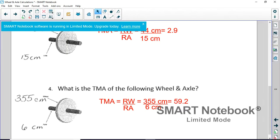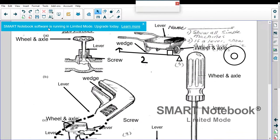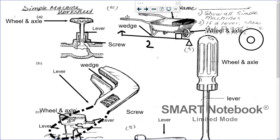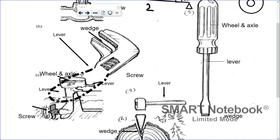Now the simple machines worksheet. For B, we have a wheelbarrow: the whole thing is a class two lever, there's a wheel and axle at the wheel, and even the little part that hooks into the ground when it's sitting could be a wedge. The wrench — the whole thing is a lever, there are little wedges in between, and there's a screw where it twists.